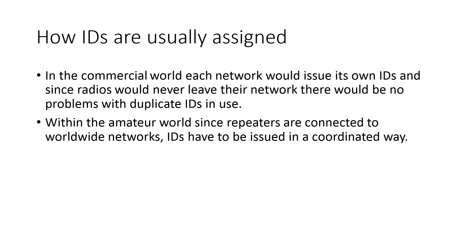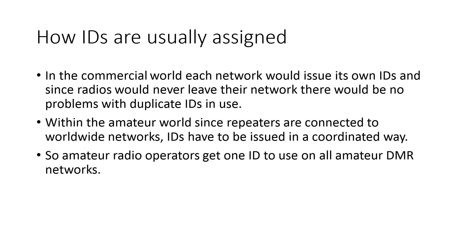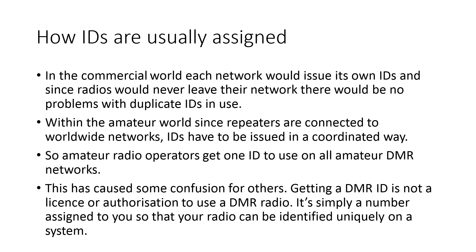Within the amateur world, since repeaters are connected to worldwide networks, DMR IDs have to be issued in a coordinated way so that no two people use the same ID. Amateur radio operators get one ID to use across all amateur DMR networks. This has caused some confusion: getting a DMR ID is not a license or authorization to use a DMR radio — it's simply a number assigned to you so your radio can be identified uniquely on a system.